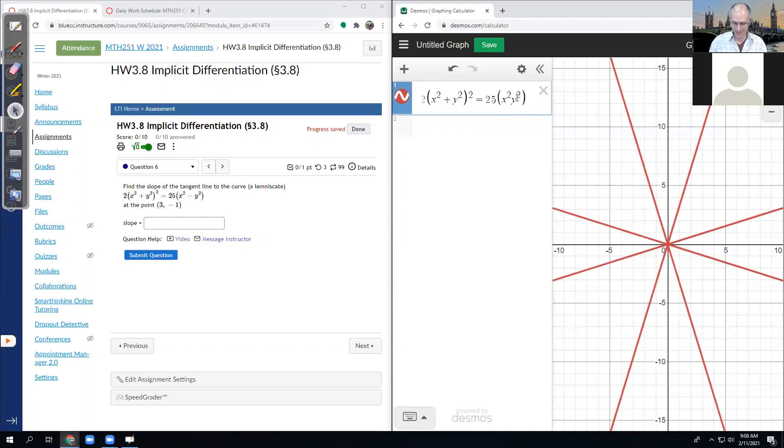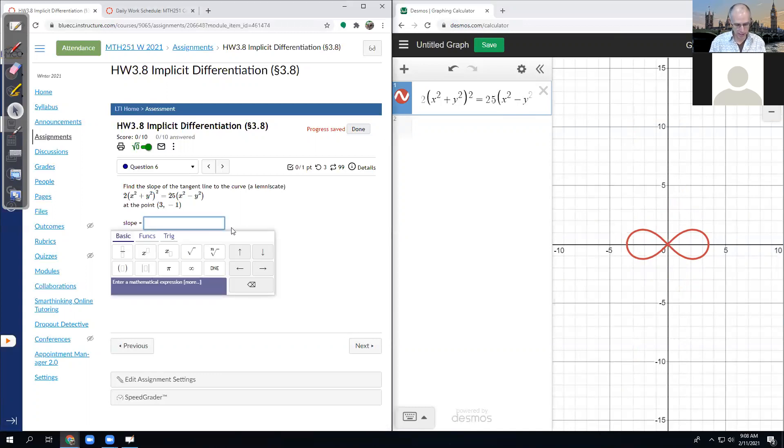Check that out. Nice. Okay. So there's the Lemniscate right there. It's this like infinity type shape. And we want to know what's going on at the point 3, negative 1.